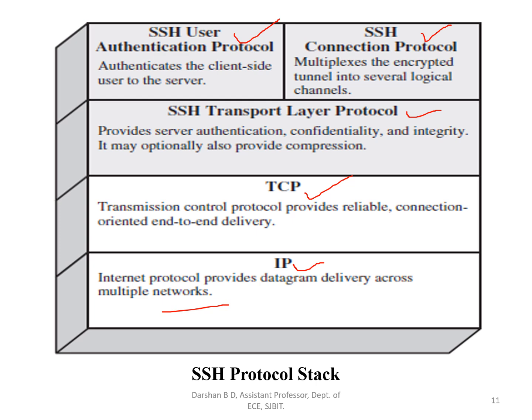In the SSH transport layer protocol, it provides server authentication, confidentiality, and integrity, and also provides compression. Data sent from client to server is kept confidential and its integrity is maintained — meaning data is not changed or altered. In the user authentication protocol, it authenticates the client-side user to the server. In the connection protocol, it multiplexes the encrypted tunnel into several logical channels.